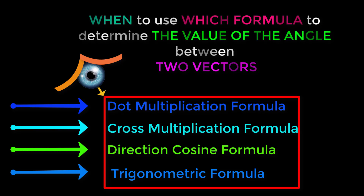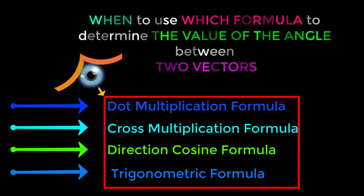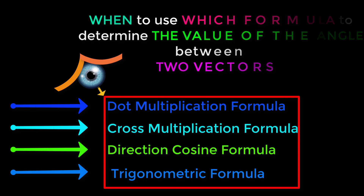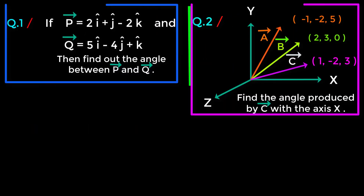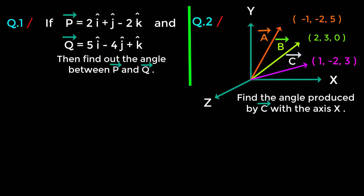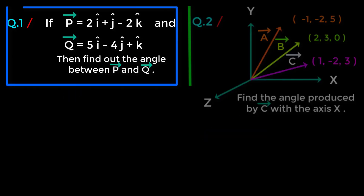First, we will try to understand the pattern or form of the question, and then on the basis of that pattern or form, we will decide which formula to apply. Let us first get acquainted with the pattern or form of questions we usually see in the question paper. These are different questions of different patterns, and from both we have to determine the angle.